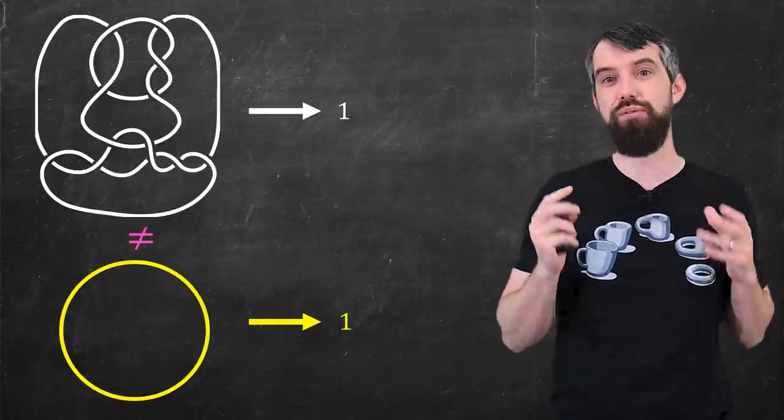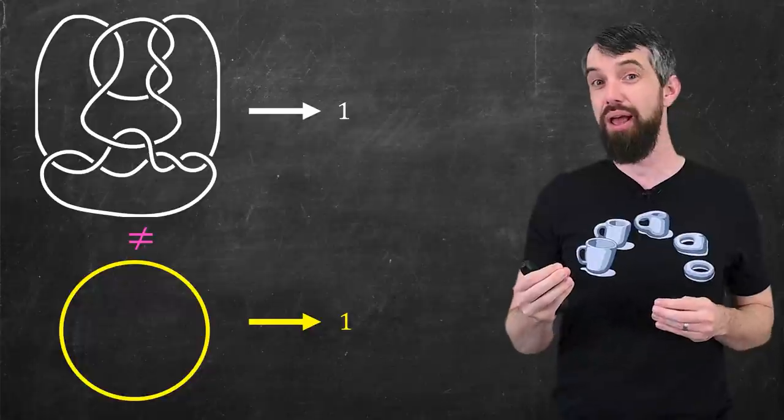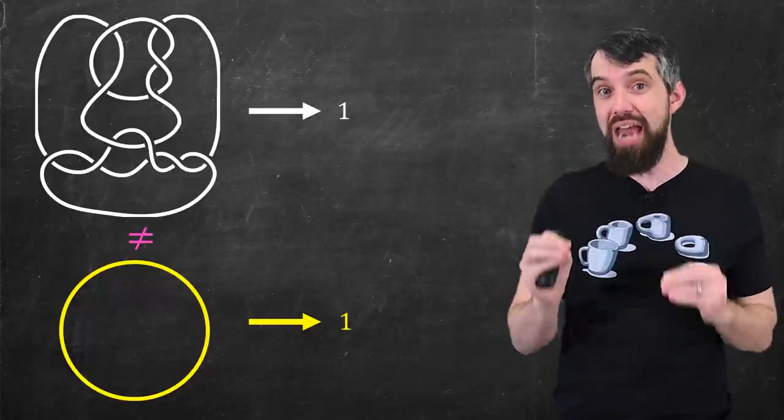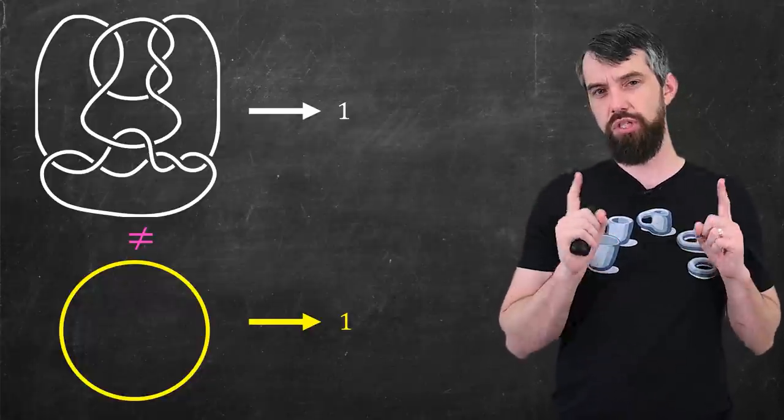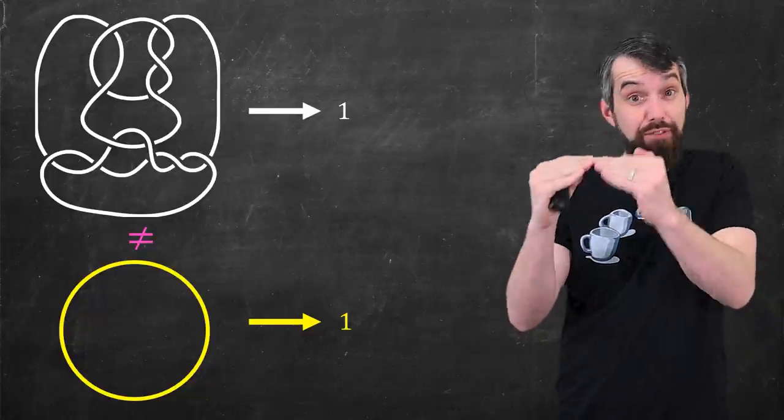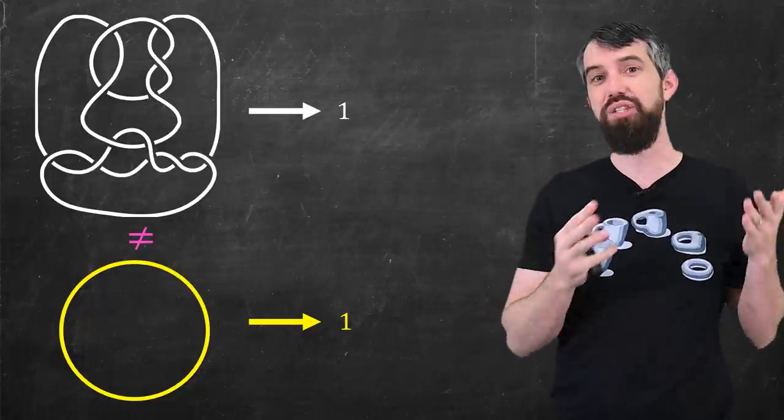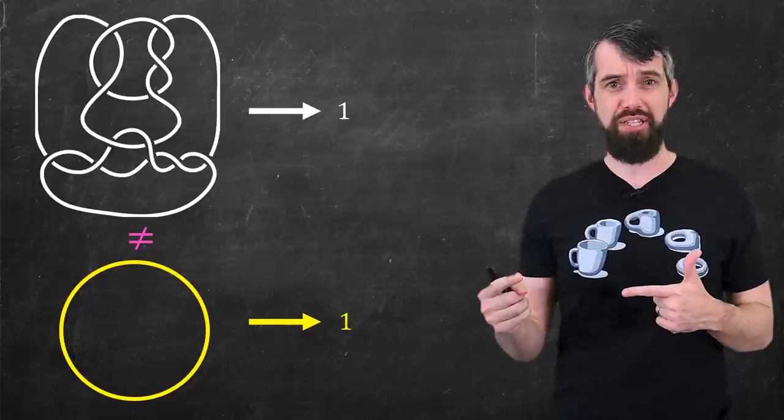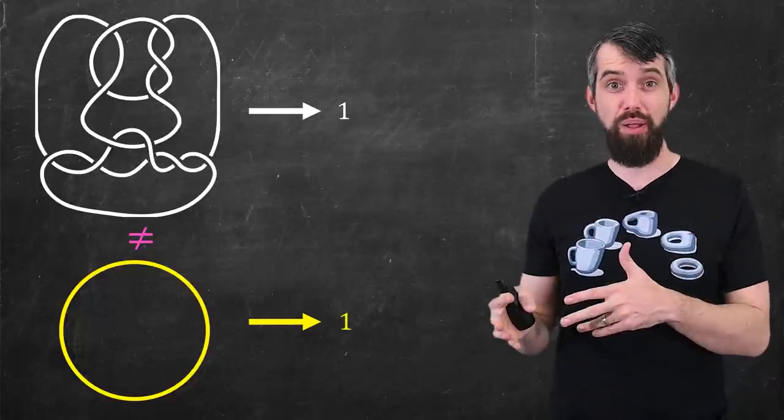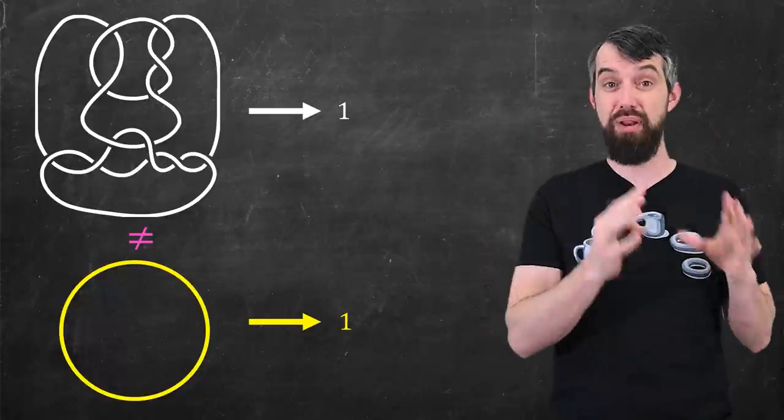There is no sequence of Reidemeister moves that takes this complicated top one and makes it into the unknot. But the Alexander polynomial cannot tell the difference. So what can we do? Well, mathematicians have improved significantly on the Alexander polynomial that first came out in 1923. There's an upgrade to something called the Alexander-Conway polynomial that actually helps its computability and allows it to be computed in a bit of a different way.